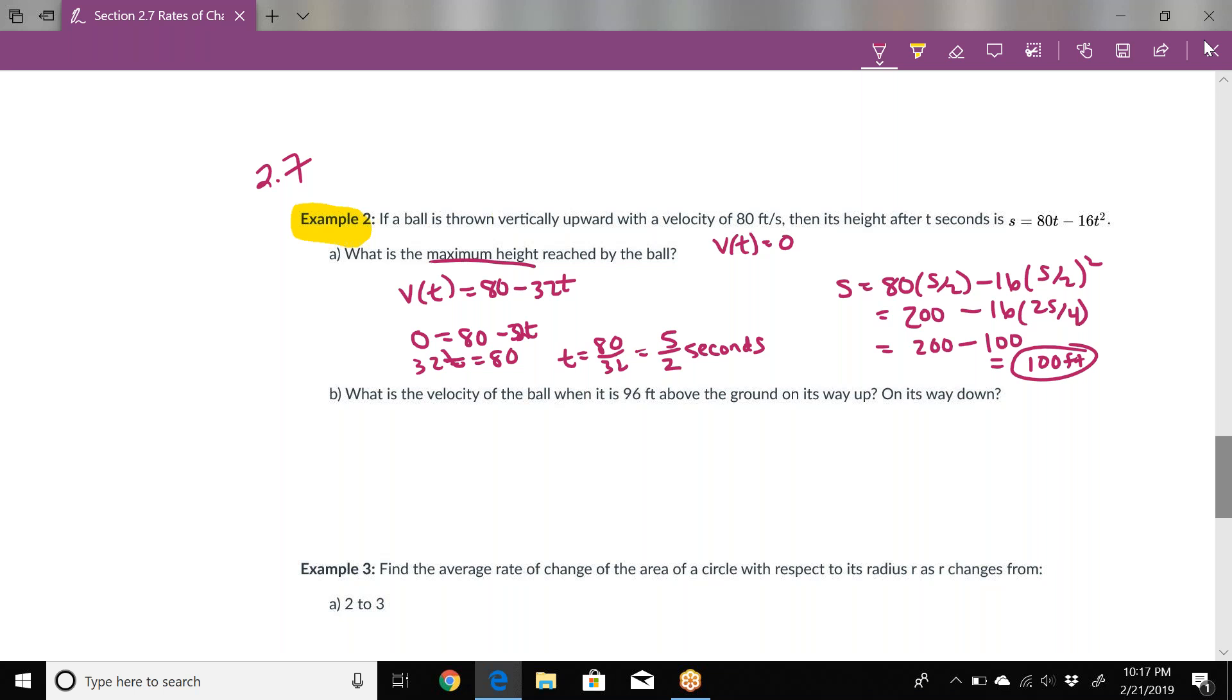Now, what is the velocity of the ball when it is 96 feet above the ground on the way up and on the way down? We're going to set 96 as our position, so 96 = 80t - 16t², because that's what it means to be 96 feet above the ground.